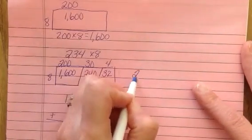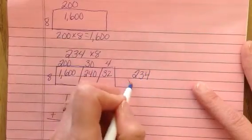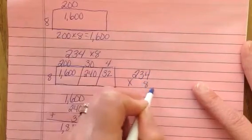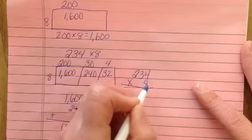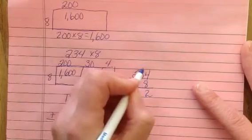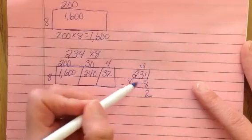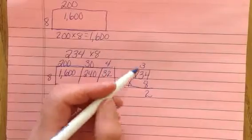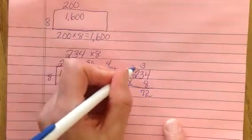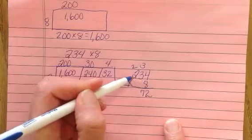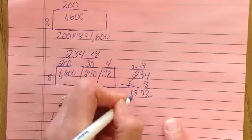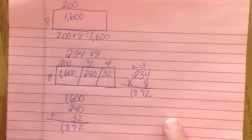If we try the standard algorithm, 234 times 8. 4 times 8 is 32. We put down the 2, carry the 3. 8 times 3 is 24, plus 3 more is 27. Put down the 7, carry the 2. 2 times 8 is 16, plus 2 more is 18. 1,872.